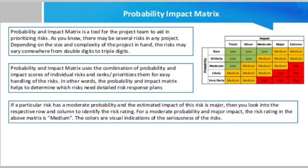The Probability and Impact Matrix is a tool for the project team to aid in prioritizing risk. There may be several risks in any project; depending on the size and complexity of the project, the risks may vary from double digits to triple digits. But we do not have the time and money to look into all of these risks, let alone the response action. So it is necessary to find a way to identify those critical risks which need the most attention from the project team.